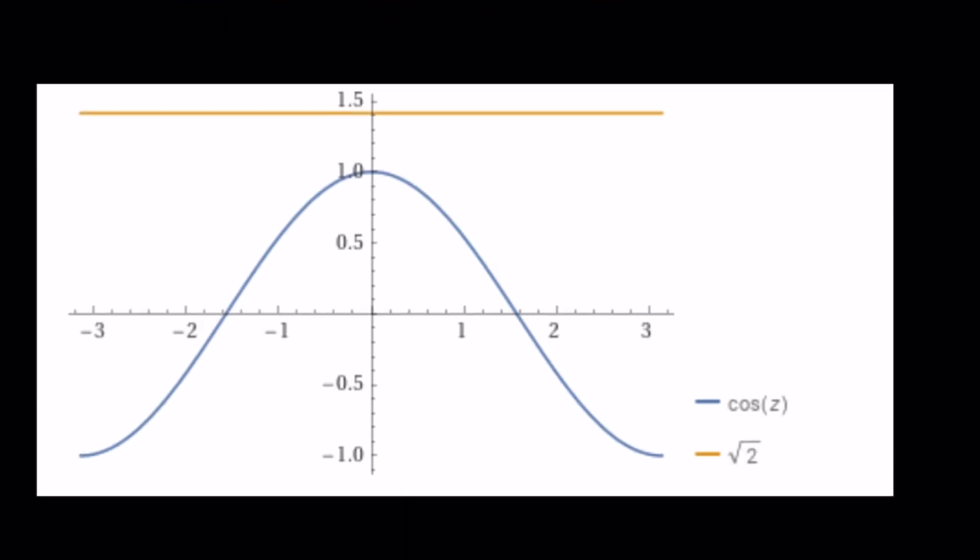Wait a minute, what is this? The graph of cosine Z and the graph of Y equals root 2. There are no intersection points, of course, because there are no real solutions. The maximum value for cosine is 1 in the real world. Cosine cannot exceed that in the real world again. That's why root 2 is going to be outside the real world. Make sense? Okay, great.